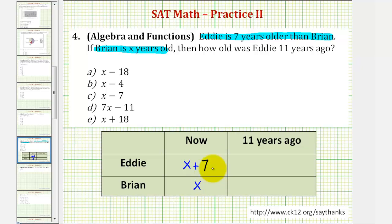And now we're asked to find Eddie's age eleven years ago. Well this is how old they are now. To find their age eleven years ago, we'd have to subtract eleven from both of these expressions.